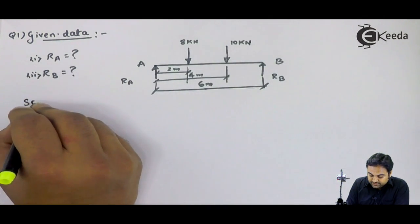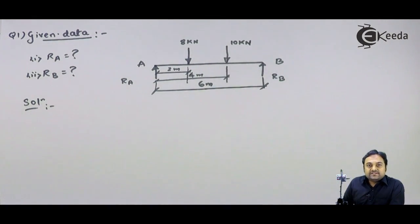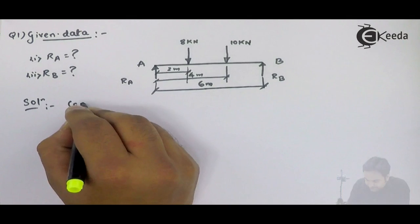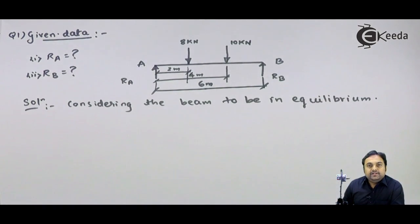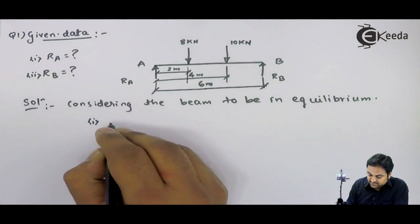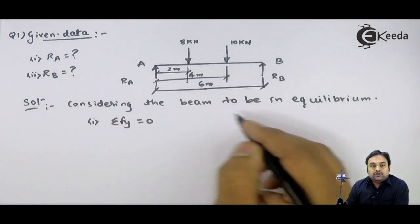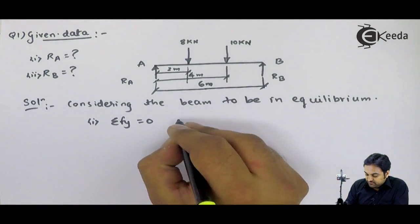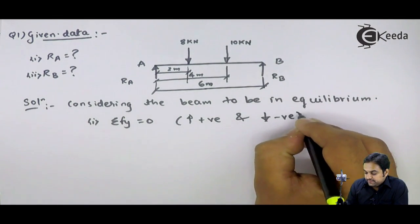Now for the solution: as we can see in this problem, there are no horizontal forces — we have only vertical forces. Considering the beam to be in equilibrium, I will say summation of Fy equals 0. Upward forces will be treated as positive and downward forces as negative.